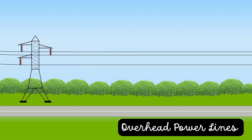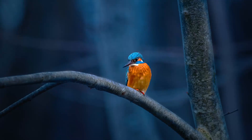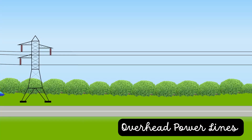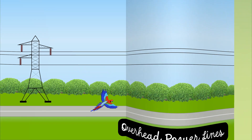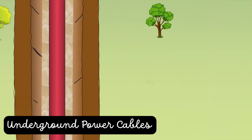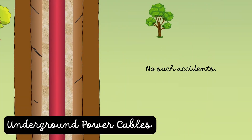The overhead power lines endanger birds around the world, as a large number of them are killed every year through electrocutions and collisions. We don't have such accidents with underground power cables.